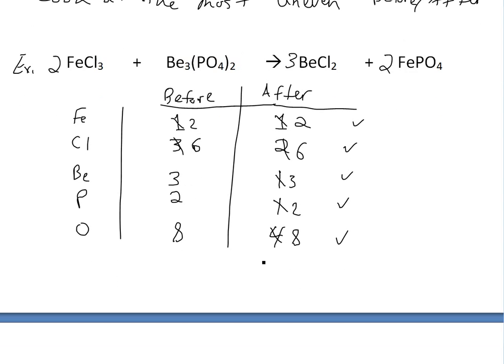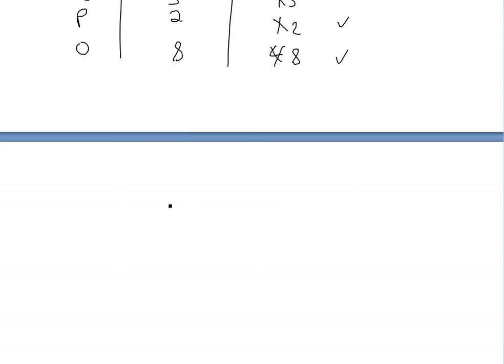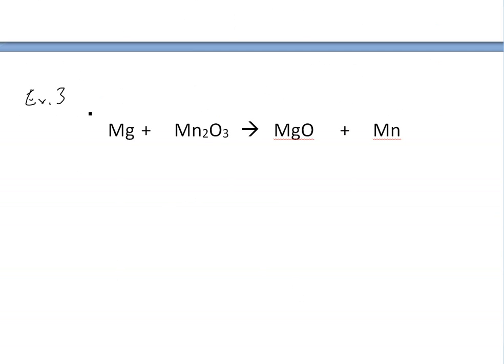So let's do one more example. Just another hard one. And then we'll be done. Alright so the last example, here we have Mg plus manganese or magnesium plus manganese Mn2O3. Then it reacts to get this stuff here.